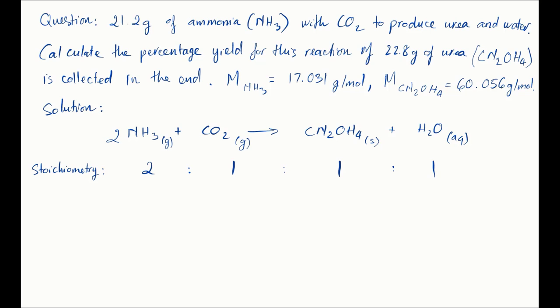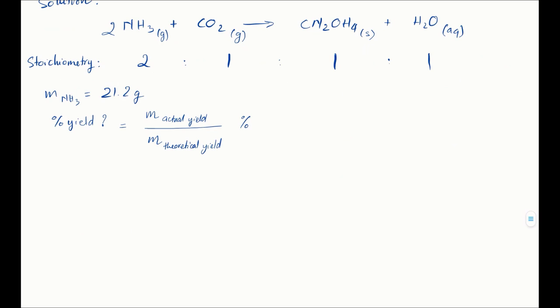Now let's summarize the question. 21.2 grams of ammonia. So mass of ammonia is equal to 21.2 grams. Calculate the percentage yield. So yield is unknown and you calculate that by dividing the actual yield by the theoretical yield. So what's missing? We don't know the theoretical yield yet. So we need to calculate that.